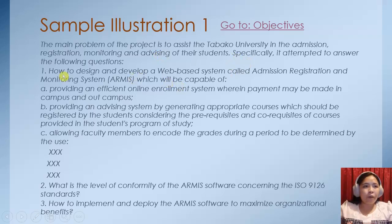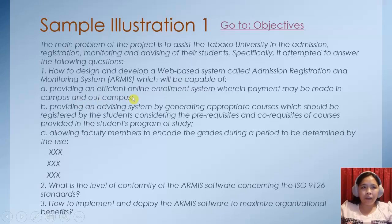So we have here our specific questions. How to design and develop a web-based system called Administration, Registration, and Monitoring System — ARMYs — which will be capable of providing an efficient online enrollment system wherein payment may be made on campus and off campus. Take note, the payment options — on campus and off campus — are already specified here.